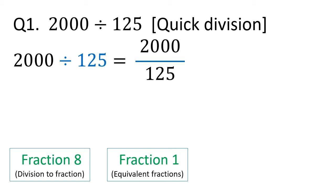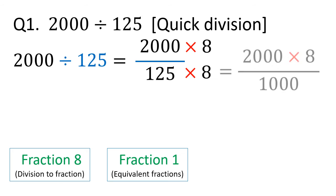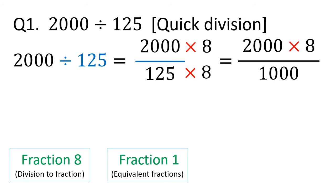Since the denominator is 125, we will have 1000 if we multiply 125 by 8. So let's multiply both the numerator and the denominator by 8. The numerator stays as 2000 times 8, and the denominator becomes 1000. We now have the fraction 2000 times 8 over 1000.